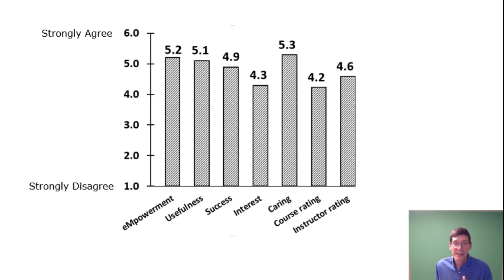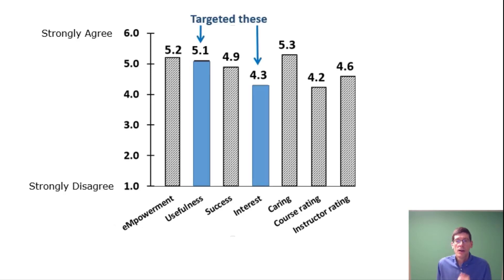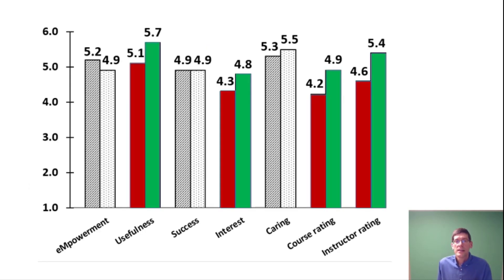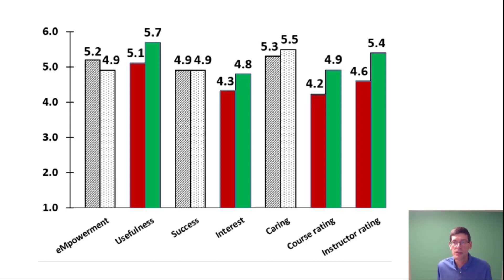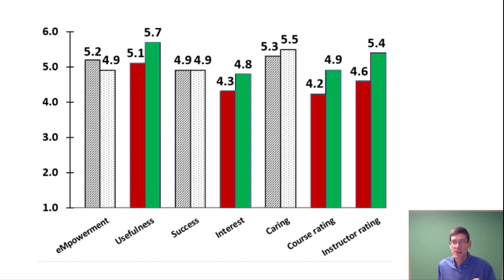You can also look at your course rating and instructor rating. In one class, I ended up targeting usefulness and interest — even though usefulness was fairly high, I wanted to increase both. The green shows what happened after I did an intervention; the red was from the semester before. You can look each semester and see if you're improving. The green scores went up, which was also reflected in the course and instructor ratings, which also went up.